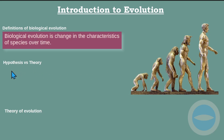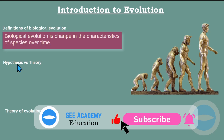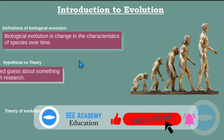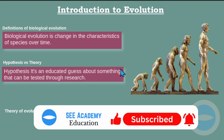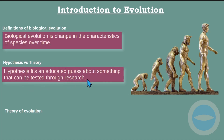Now let's look at the difference between hypothesis and theory. A hypothesis is an educated guess about something that can be tested through research. When we talk about hypothesis, we talk about something that we are guessing — we just guess this is true without doing some research. For example, if we just say humans were walking like monkeys one million years ago without doing some research, this is what we call a hypothesis.